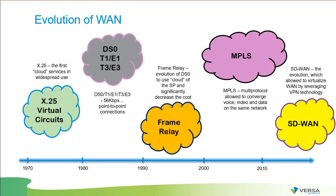Frame relay came to change or augment T1/E1 — it was a much faster, much cheaper, and much more flexible solution that became very popular in the 90s. And of course, MPLS technology is still popular up until this day. It was designed to replace frame relay and became very popular in no time. It is super flexible, can carry all types of traffic — voice, video, data — multi-protocol, making the WAN world way more flexible and scalable.